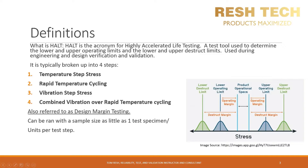Let's go ahead and define HALT. What is HALT? HALT is Highly Accelerated Life Testing. It is a tool used to determine the lower and upper operating limits and the lower and upper destruct limits for your product or system. It is used during the engineering design verification and validation stages. It is typically broken up into four steps: the temperature step stress, rapid temperature cycling, vibration step stress, and combined vibration over rapid temperature cycling. The bottom right-hand of the screen displays the parameters that we are trying to determine or confirm for our design.